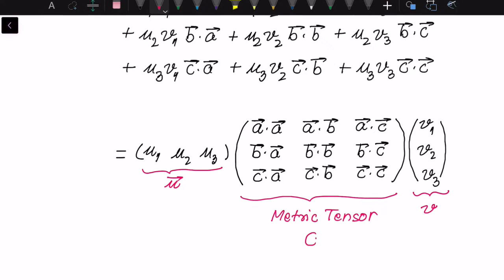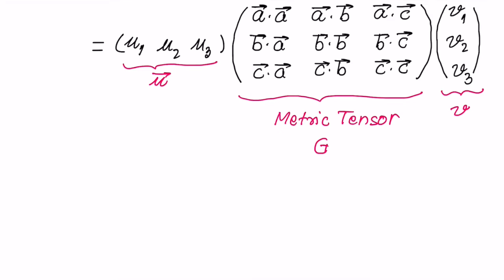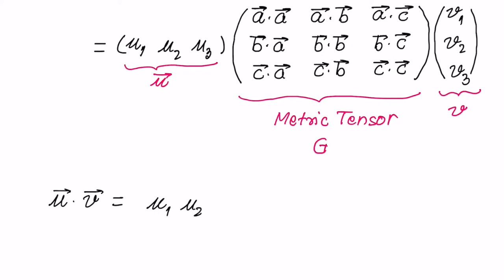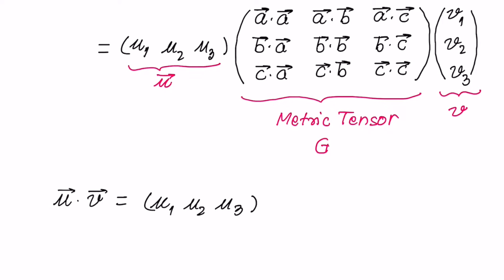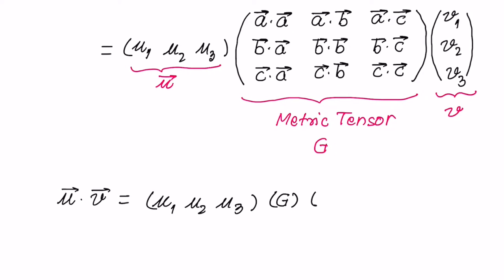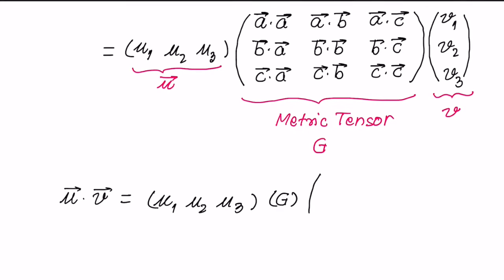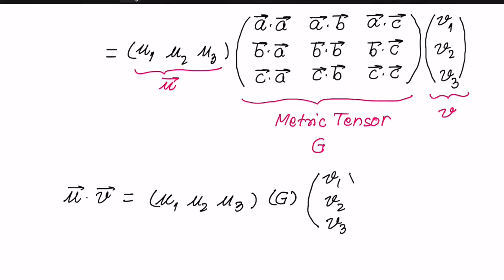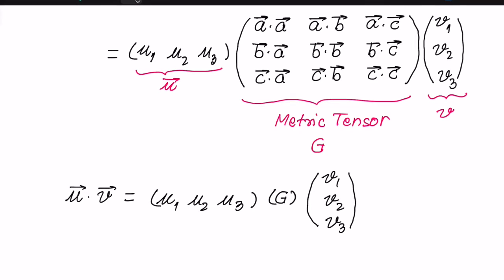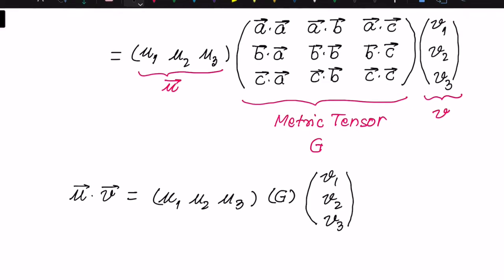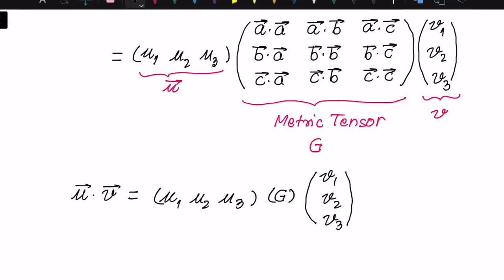We can write this dot product as a product of three matrices: a row vector representing vector U, a column vector representing vector V, and in between there is a matrix of dot products of the basis vectors. This matrix is what we define as the metric tensor, and we give it the symbol G. So we can write the dot product U · V as the row vector [U1, U2, U3] times the metric tensor G times the column vector [V1, V2, V3].